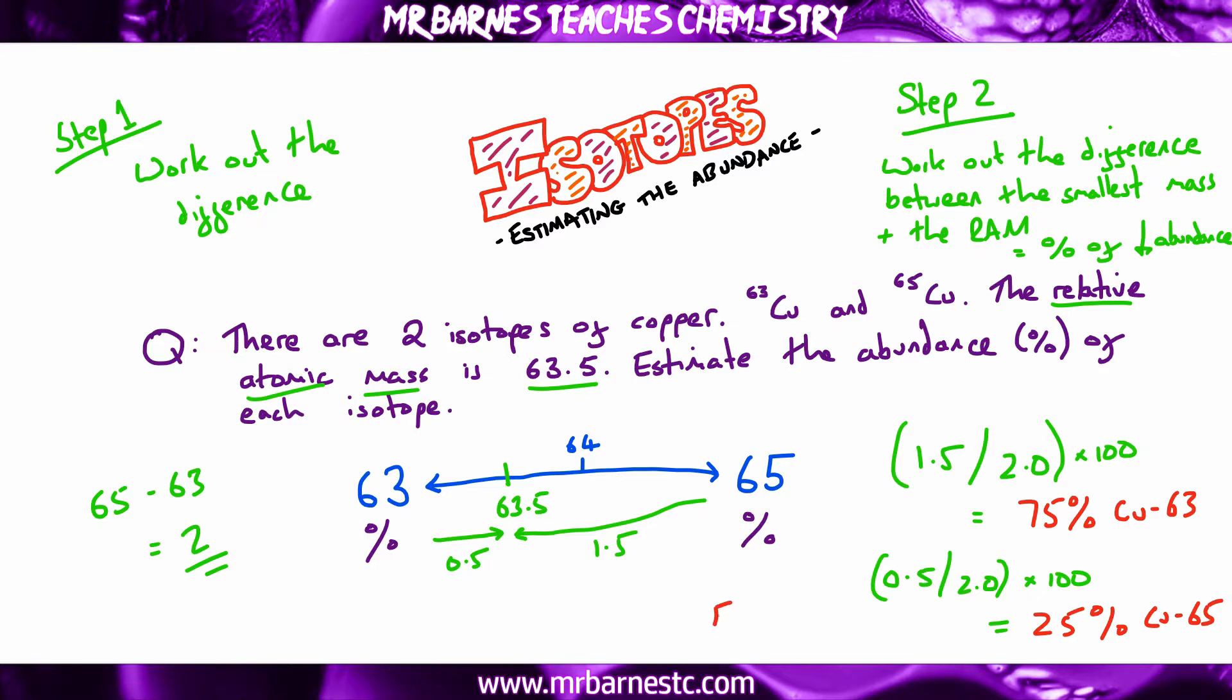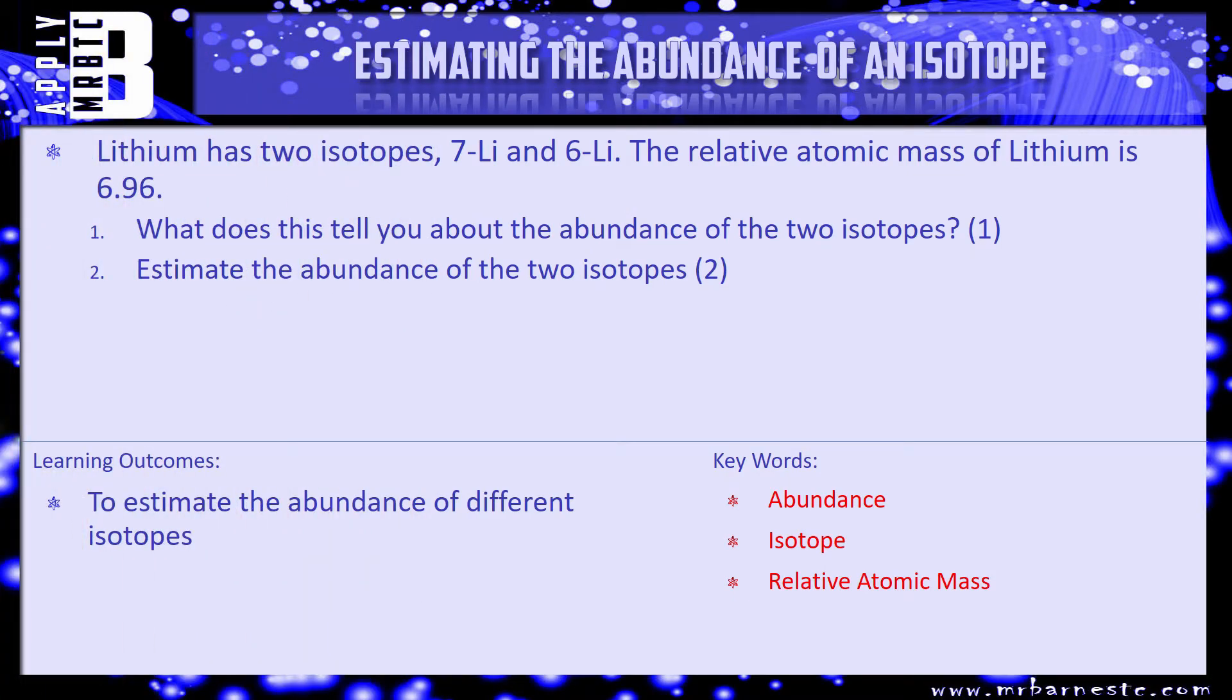And that is everything you need to know for this video. So let's have a look at a couple of questions. So the first question says, lithium has two isotopes, Li7 and Li6, so a mass of 7 and a mass of 6, and the relative atomic mass of lithium is 6.96. So what does this tell you about the abundance of the two isotopes? It's worth one mark. So nice and simply, which one is the highest abundance or which one is the lowest abundance? Then question 2, estimate the abundance of the two isotopes. So pause the video, have a go at both the questions. If you're not sure, go back to the information that I went through earlier on. Have a go at it, and we'll see how you've done in a minute.